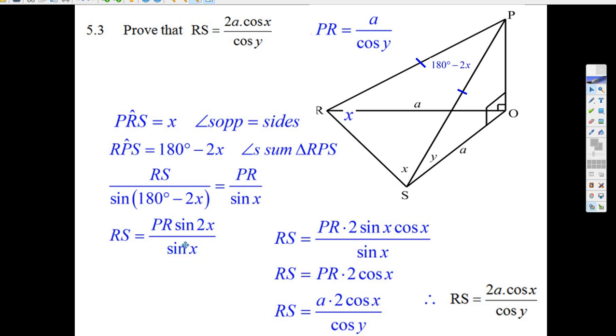We're getting real close now because the sine of 2X from our formula sheet is 2 sine X cos X. The sines X cancel and you've got 2 cos X. Well, we know what PR is. It's A over cos Y. So we substitute PR with A over cos Y. Well, that is pretty. A times 2 is the same as 2A cos X over Y. So that's what RS is.